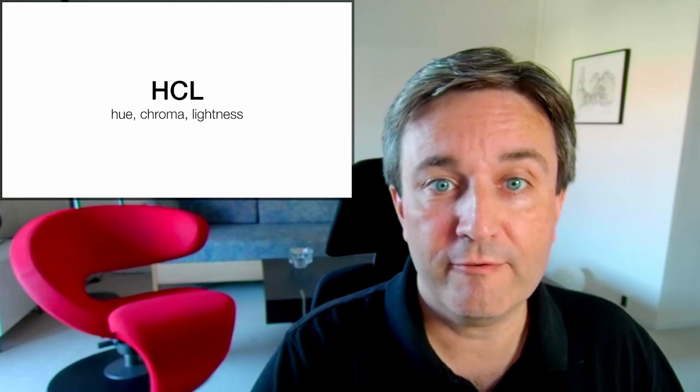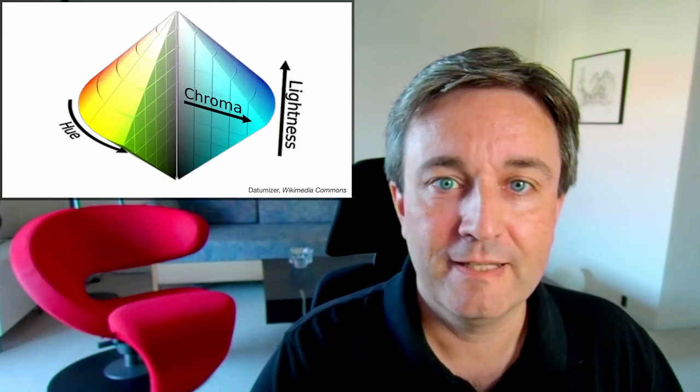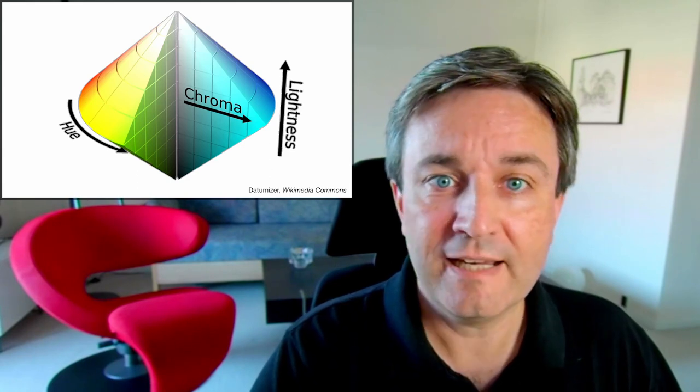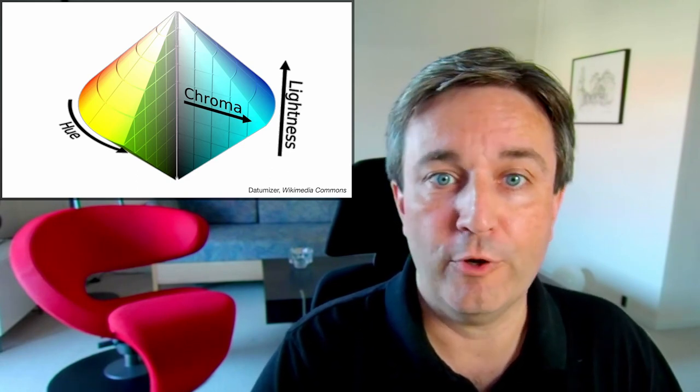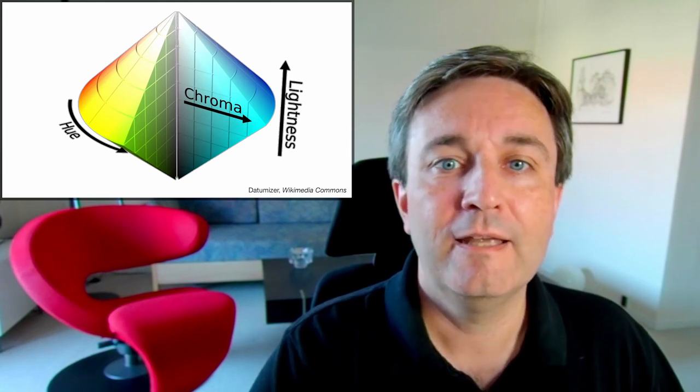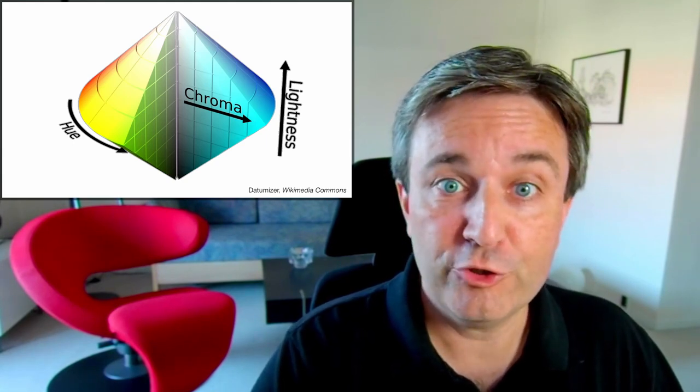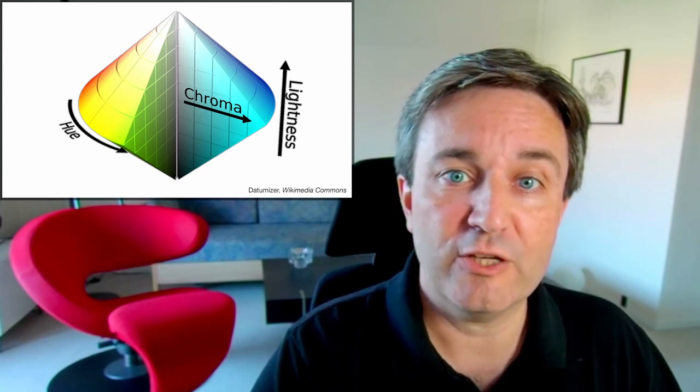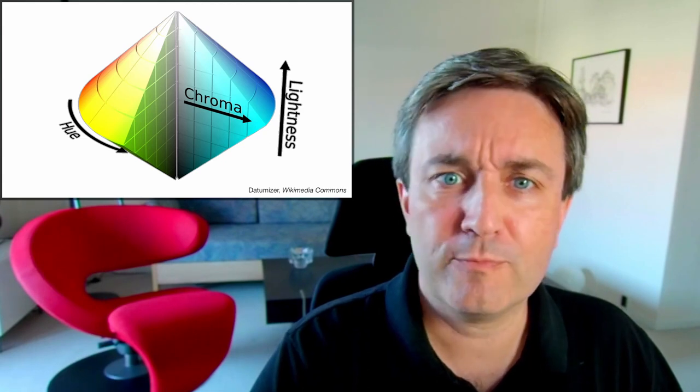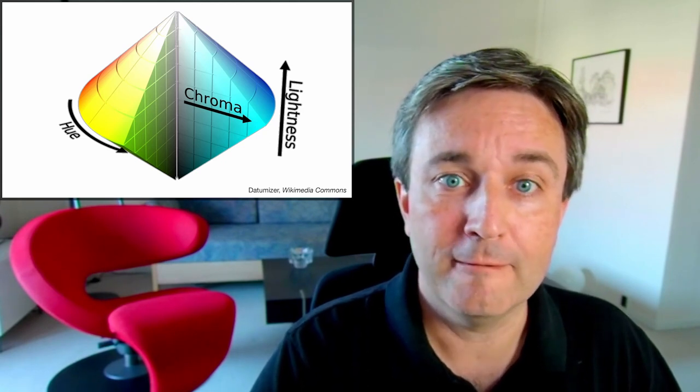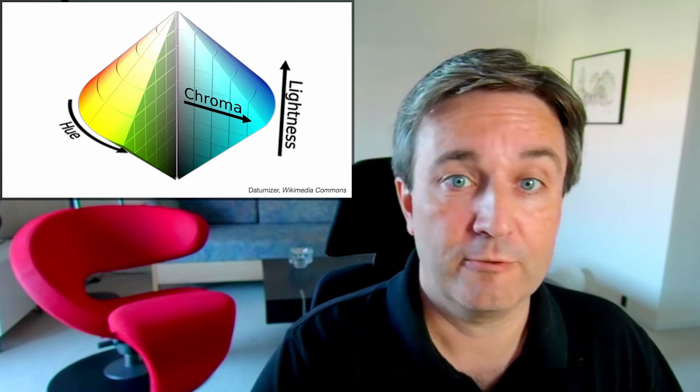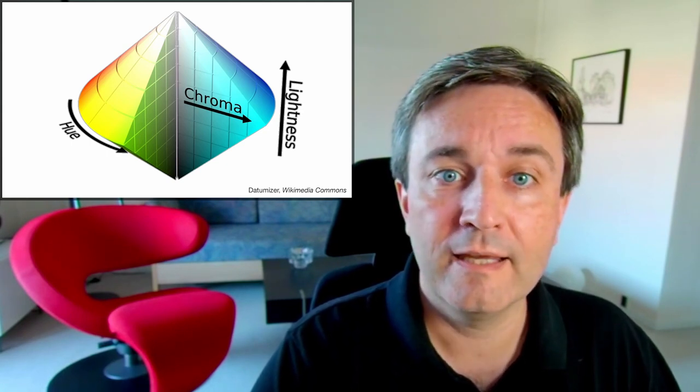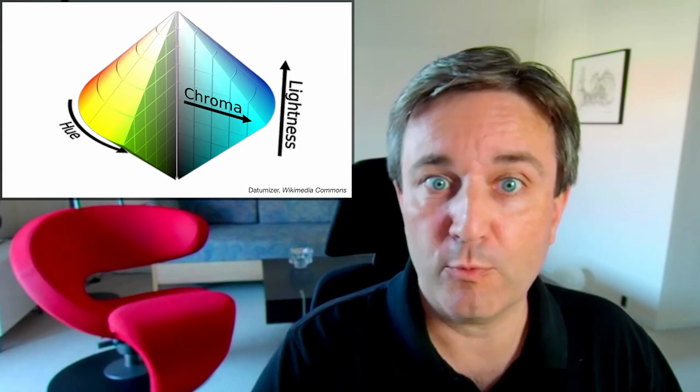And that's why we have HCL: hue, chroma, lightness. Now it's no longer a cylinder. You see, we have a single point representing white and a single point representing black. The lightness scale is still the same. The hue is still the same. But we've now replaced saturation with chroma. And you see, it's only possible to reach 100% chroma at 50% lightness. And at 100% lightness or 0% lightness, white and black, you cannot have any chroma. This makes more sense.